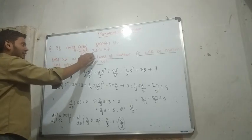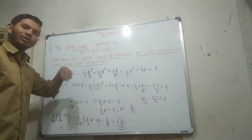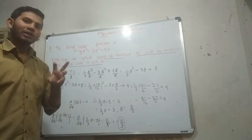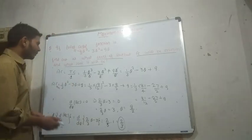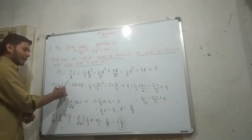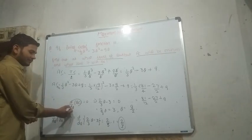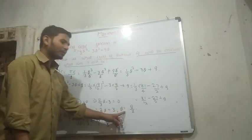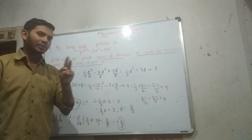If the total cost function is given, find out at what level of output AC will be minimum. We will differentiate with respect to Q. The first derivative condition is D by DQ equals zero — that gives us the level. Maximum or minimum depends on the second derivative condition.